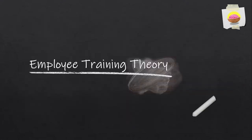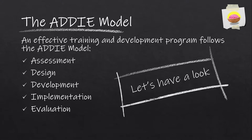But before we get into the actual nuts and bolts, let's look at some training theory. There's all kinds of employee training theory out there, and there's no way we're going to go over all of it. I want to highlight one particular theory that is especially popular: the ADDIE model. ADDIE is an acronym for Assessment, Design, Development, Implementation, and Evaluation. Let's take a look at each one of these pieces.